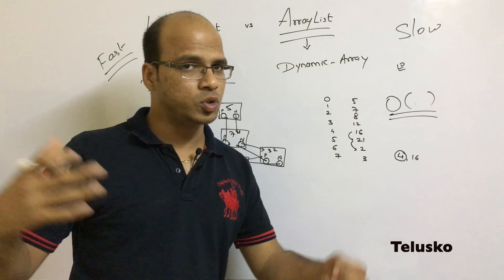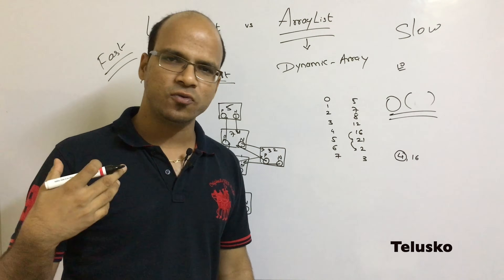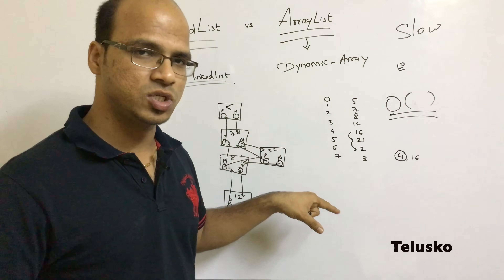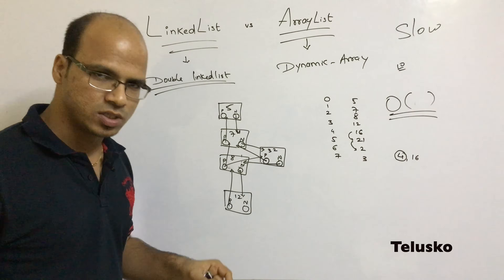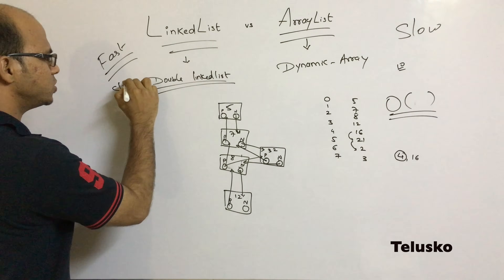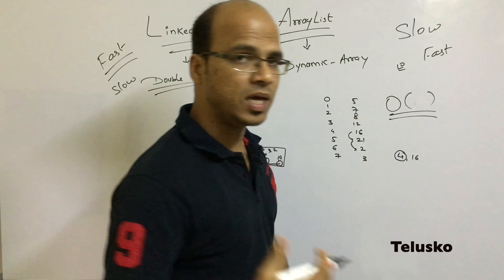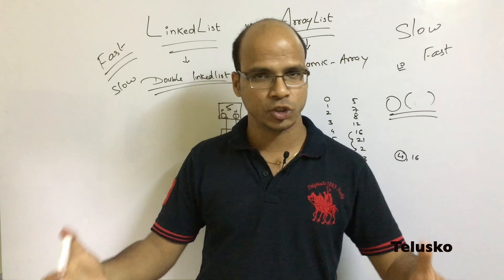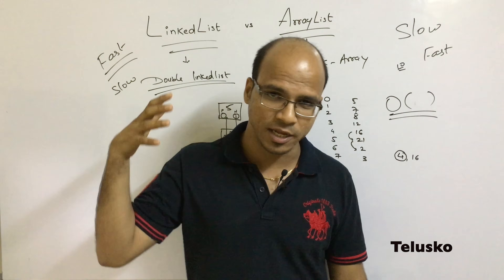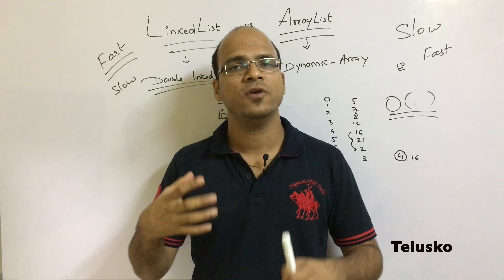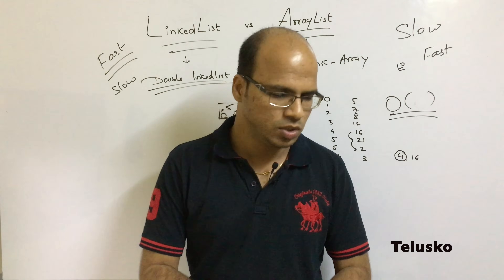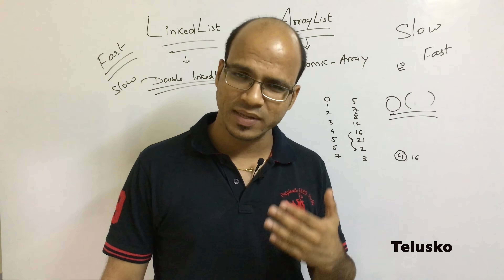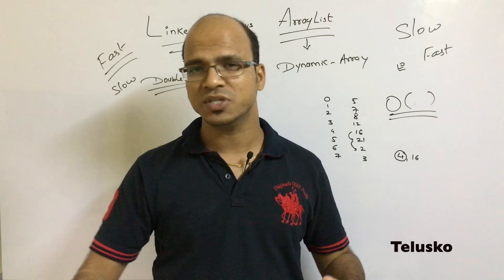Now for the next criteria — fetching values. When you fetch a value you use index numbers, and in ArrayList you can directly specify the index number, making search very easy and fast. But in LinkedList, searching is difficult because there are no direct index references, making it slow. So it depends on your requirement: use LinkedList if you frequently insert elements in between; use ArrayList if you mainly fetch values by index. In most projects we use ArrayList, but if insertion performance is critical, go with LinkedList.